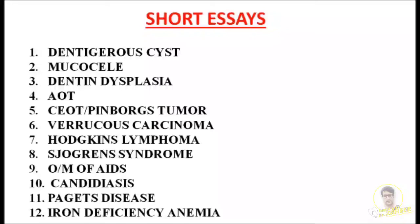The third question is dentine dysplasia. If you look into the chapter on developmental disturbances, along with amelogenesis imperfecta and dentinogenesis imperfecta, another important question you must learn is dentine dysplasia. Dentine dysplasia is usually asked among short essay questions, while amelogenesis imperfecta and dentinogenesis imperfecta are covered in long essays, as I already discussed in part 1.